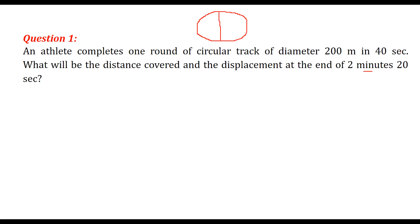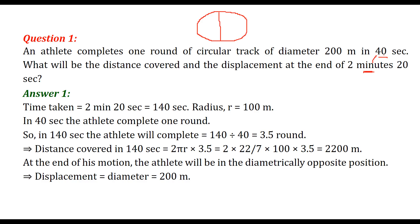For one round it takes 40 seconds. We will divide to get the number of rounds. First we have to convert 2 minutes 20 seconds into seconds. 2 minutes is equal to 120 seconds. Add 20 to get 140 seconds.